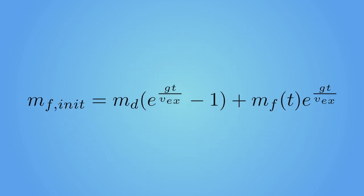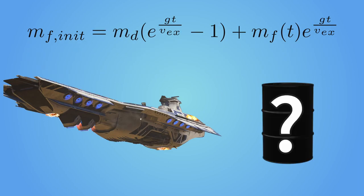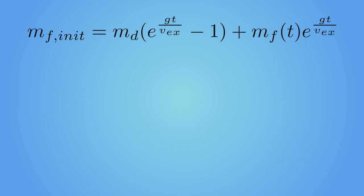This formula gives you the initial amount of fuel needed to make your rocket hover for t seconds. Pretty cool, right? Now that we have this formula, we can return to our original problem: how much fuel does a Bastion Fleet Carrier need to fly over the battlefield? Let's apply the formula. For that, we need some numbers.